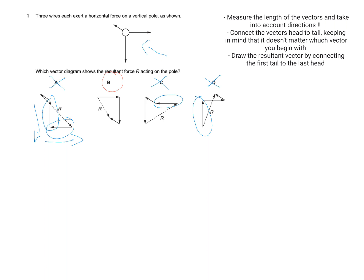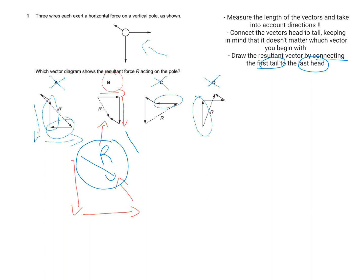In the question they started by connecting the vertical vector to the horizontal one. We can try another way: start with the vertical one, then the horizontal one head to tail, then the diagonal one. We get the resultant by connecting the first tail to the last head, and we get the same resultant vector as in choice B.